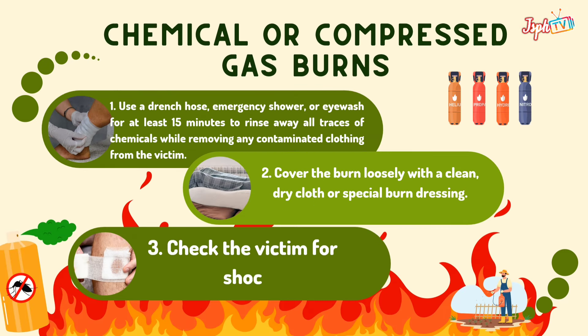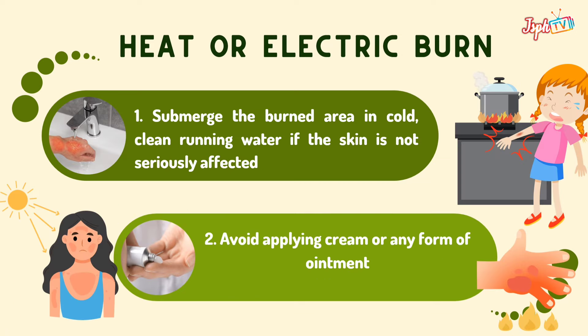For chemical or compressed gas burns: use a drenched hose, emergency shower, or eye wash for at least 15 minutes to rinse away traces of chemicals while removing any contaminated clothing from the victim. Cover the burn loosely with a clean dry cloth or special burn dressing and check the victim for shock. For heat or electric burns: submerge the burn area in cold, clean, running water if the skin is not seriously affected, and avoid applying cream or any form of ointment.